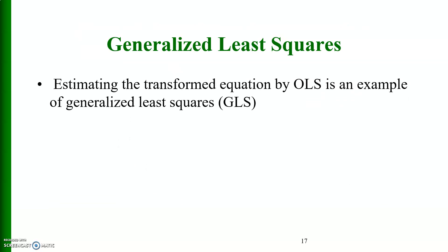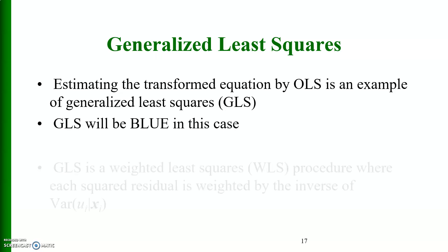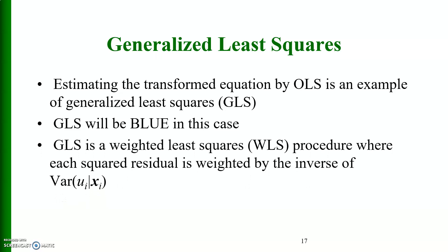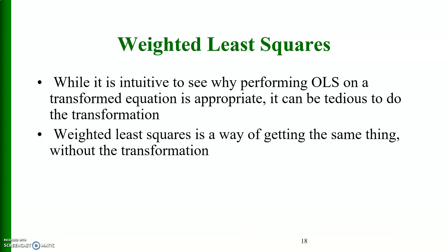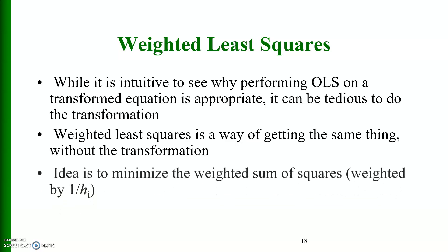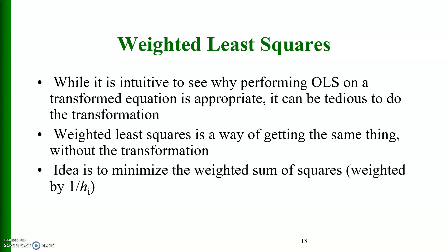Generalized least squares (GLS): estimating the transformed equation by OLS is an example of GLS. GLS will be BLUE in this case. It is a weighted least squares (WLS) procedure where each squared residual is weighted by the inverse of the variance of u_i given x_i. Weighted least squares is a way of getting the same thing without explicit transformation — the idea is to minimize the weighted sum of squares, weighted by 1 divided by h_i.